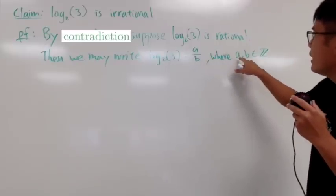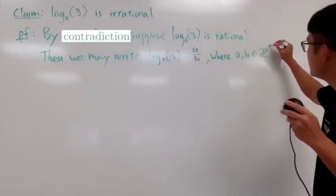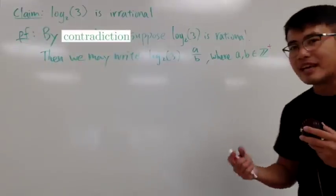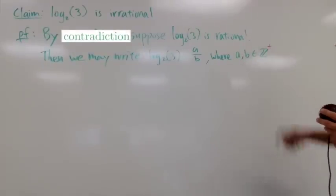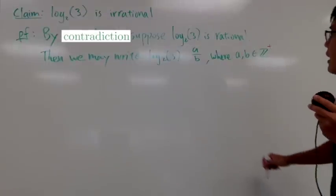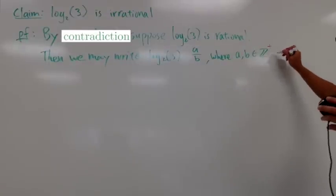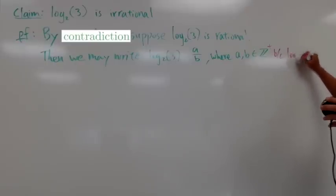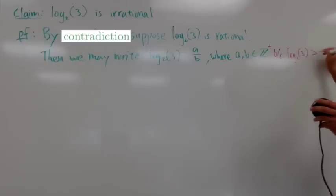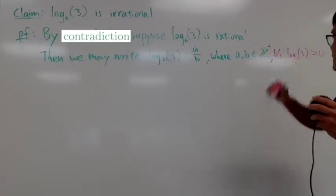So I can actually say a and b are positive integers. And when you do that, you don't have to say b is not equal to 0, because you're talking about a and b being positive integers already. And of course, this is because log base 2 of 3 is greater than 0, meaning that was positive, right?